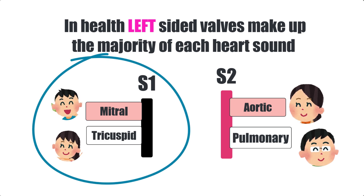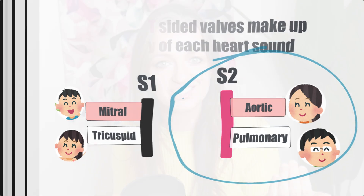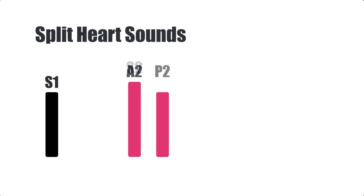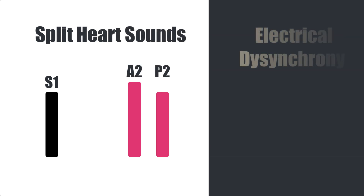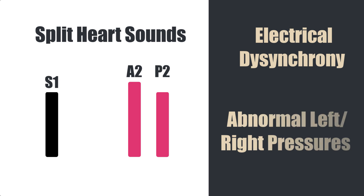There are situations where these doors are not in sync, and you can get splitting of the heart sounds. That can relate to various pathologies leading to either electrical dyssynchrony between the chambers — such as bundle branch block situations — or abnormal pressure differences between the two sides of the heart that alter the timing of the doors closing on either side. That typically happens in something like atrial septal defect, for example.